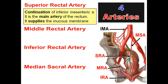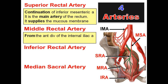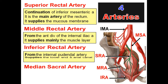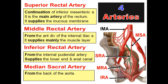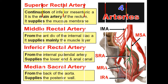The superior rectal artery supplies the mucous membrane of the rectum. The middle rectal artery is a branch from the anterior division of the internal iliac artery and mainly supplies the muscle layer. The inferior rectal artery, from the internal pudendal artery, supplies the lower end of the rectum and the anal canal. The median sacral artery arises from the back of the abdominal aorta and supplies the posterior wall of the rectum.